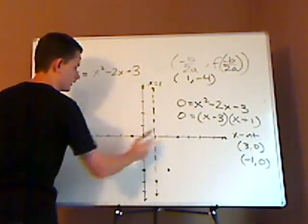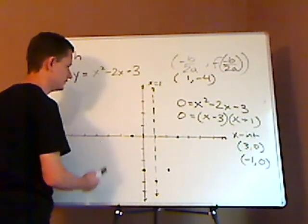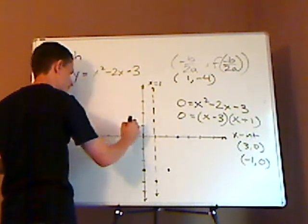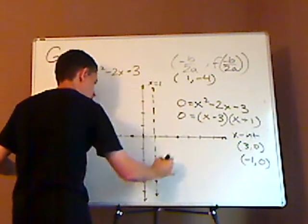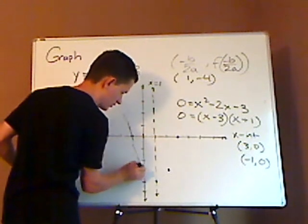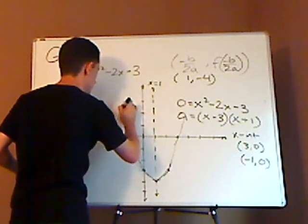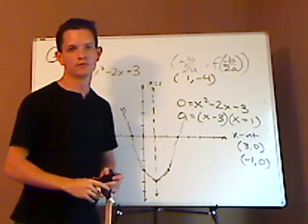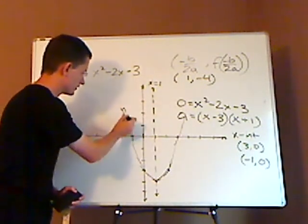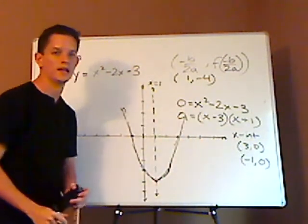Notice that it's the same distance from the axis of symmetry, which is expected because parabolas are symmetrical. And then just draw your parabola. Again, make sure that there's a curve when you draw it because it's not perfectly straight. It's not v-shaped, because v-shaped would be the absolute value function. So you just got to be careful of that. And make sure it's a solid line. And that's it.